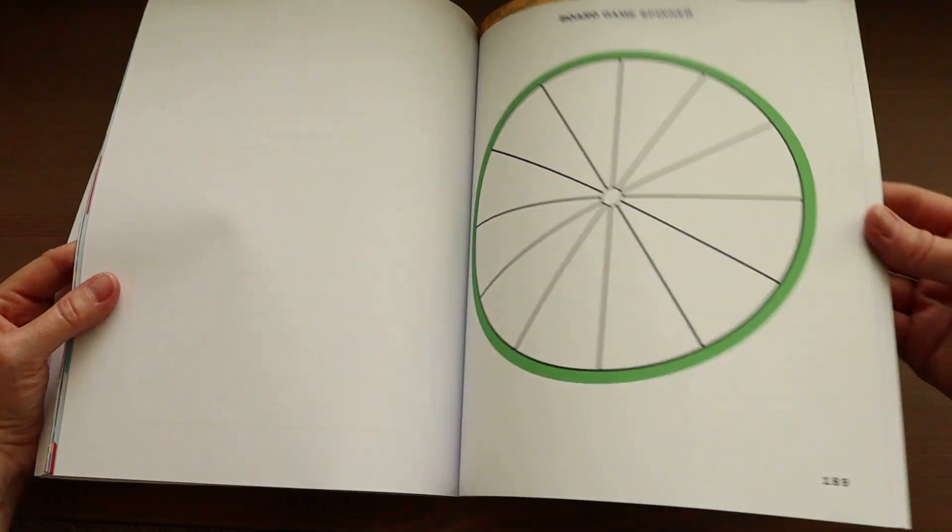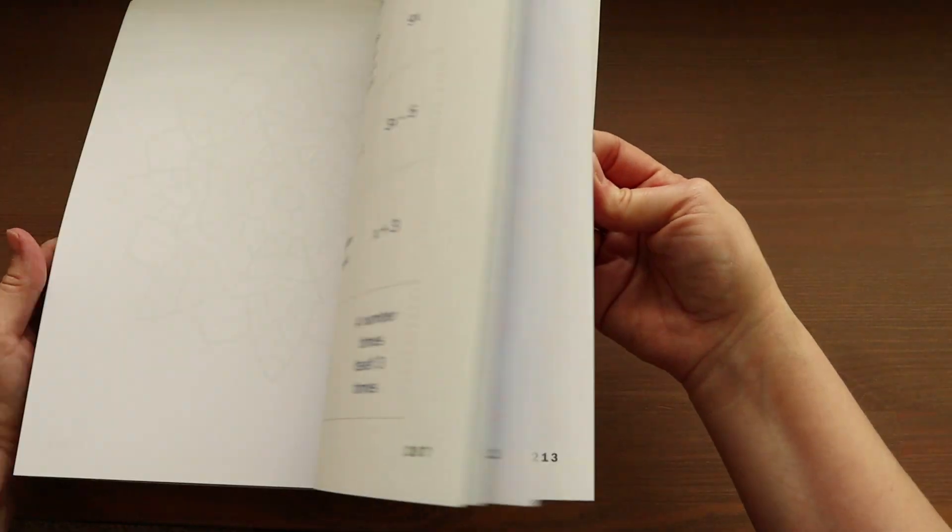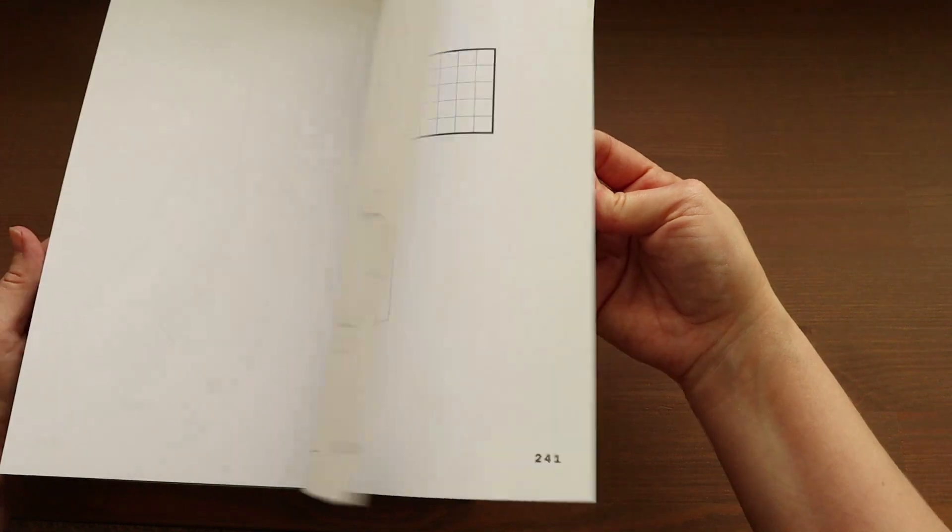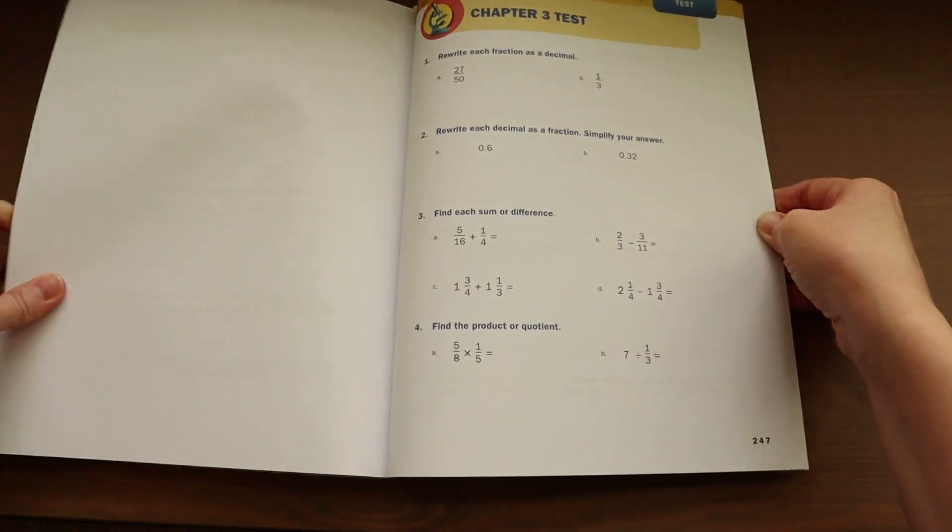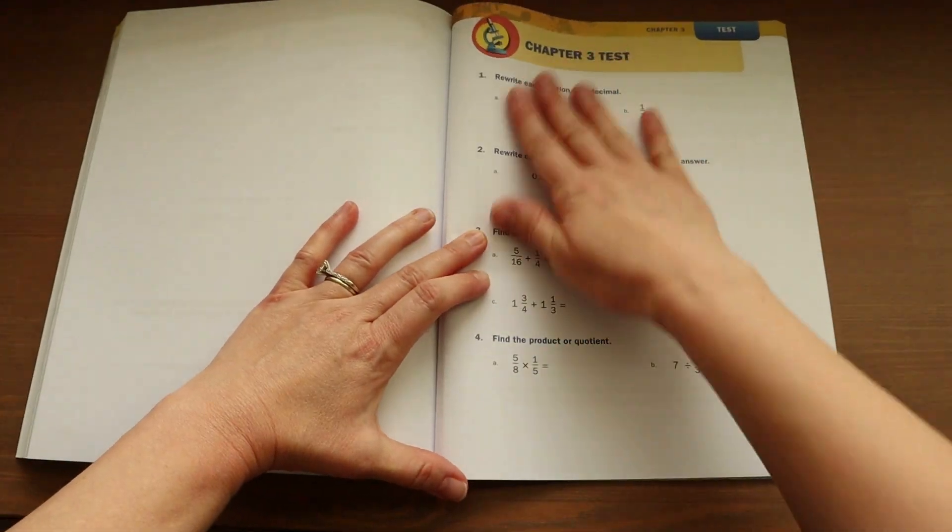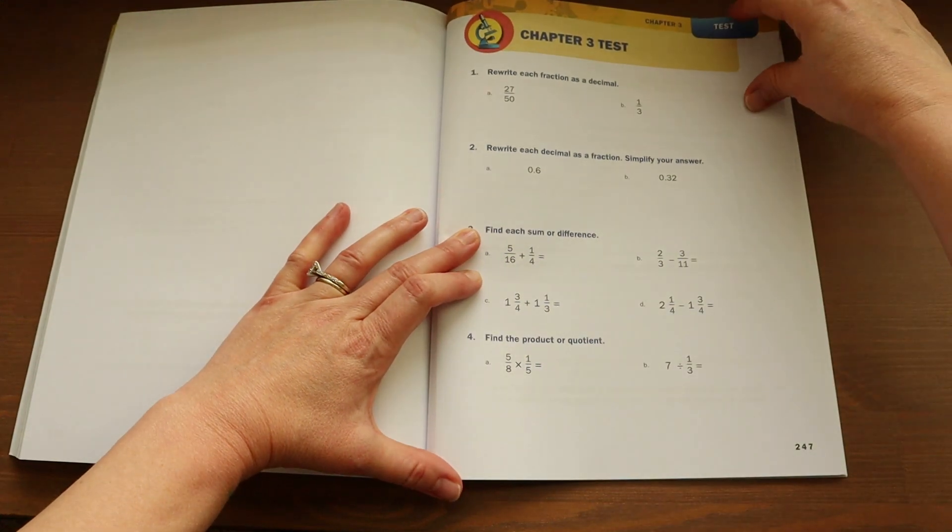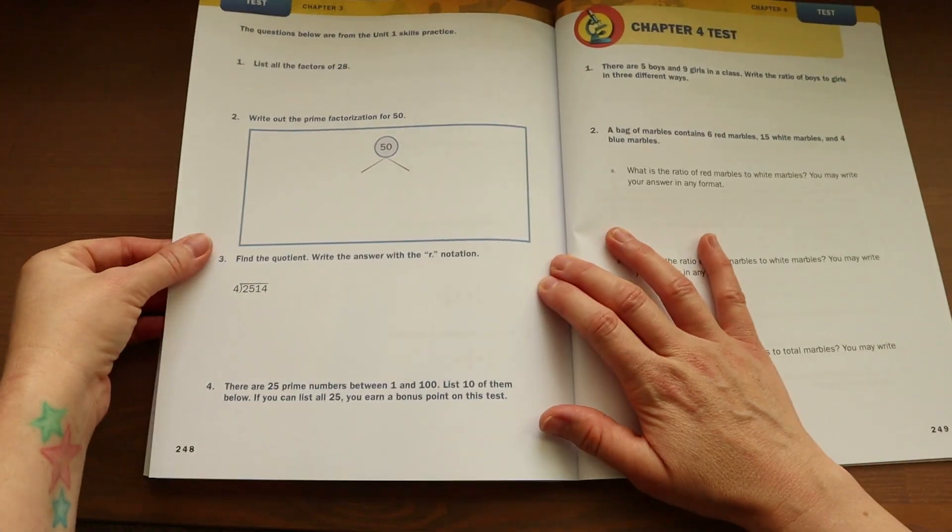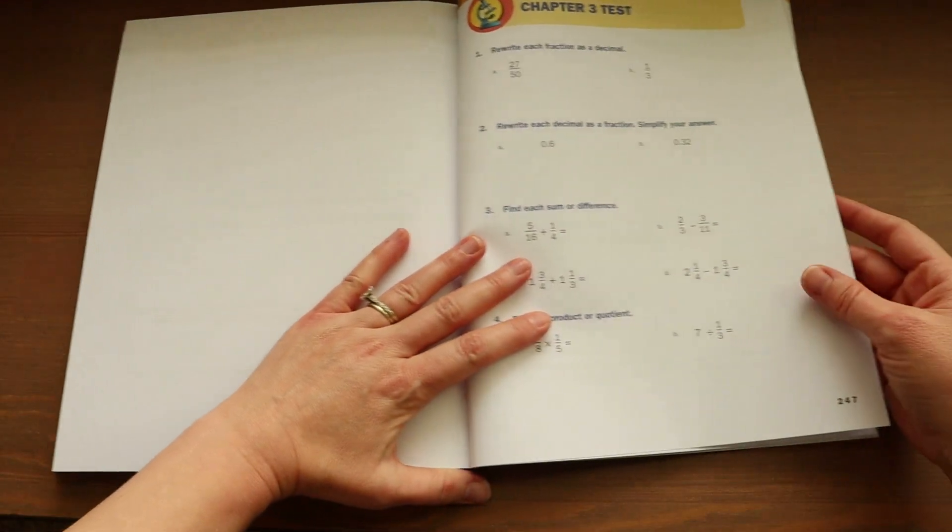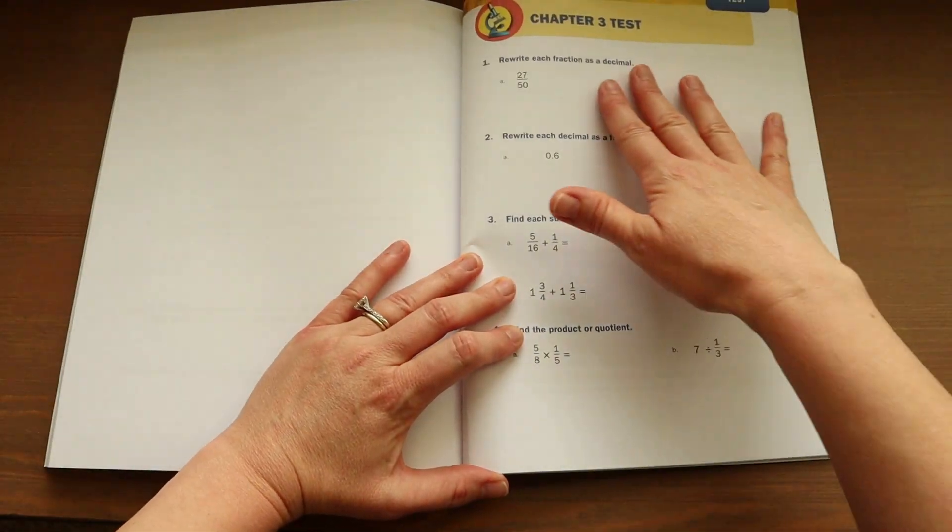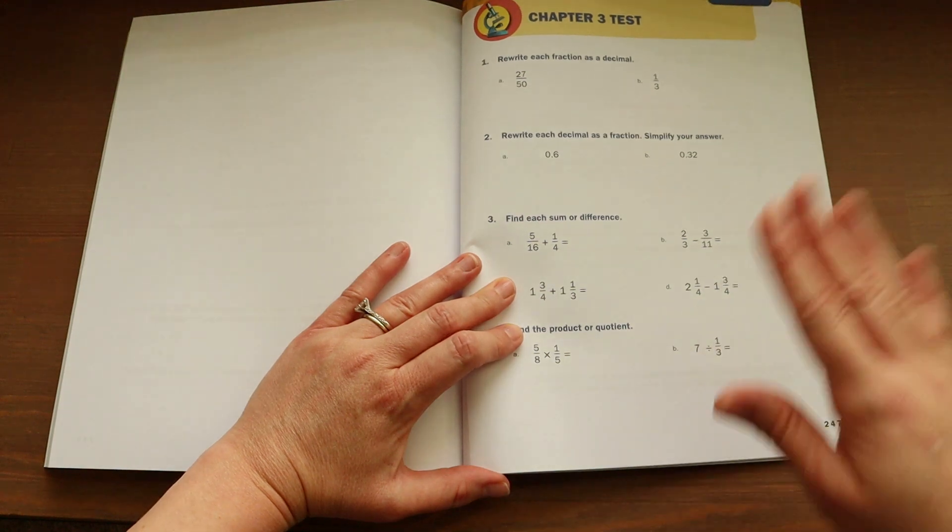Now, once you get past that, you can find the chapter tests. And so for example, this is the chapter three test and it is front and back, but no more than that. So it is a very quick to the point test.